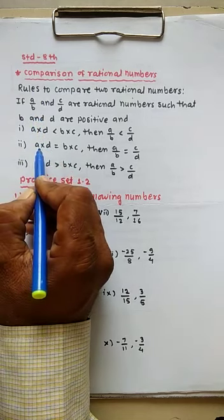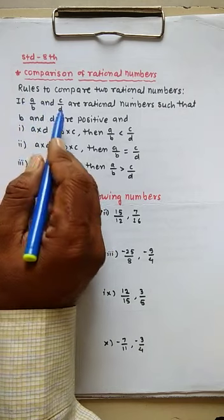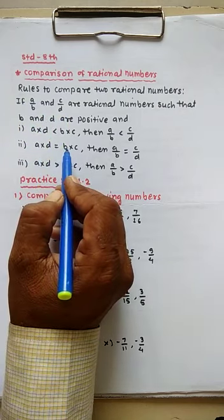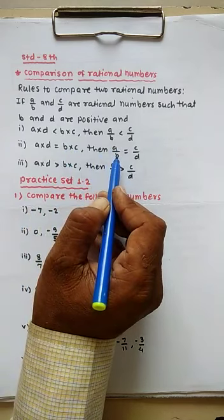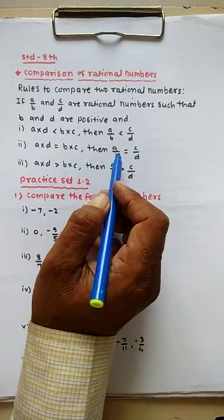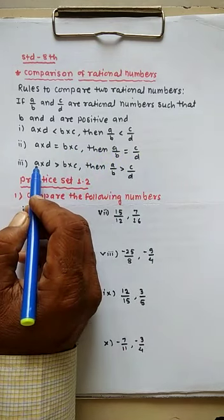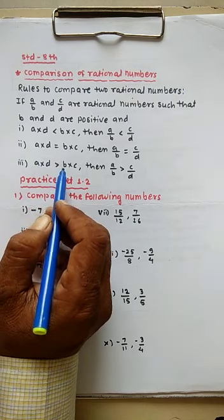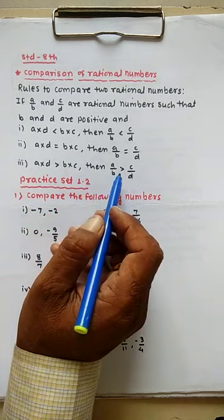Second rule: A multiplied D. First multiply and second multiply — B multiplied C. Then A divided by B equals C divided by D; the two rational numbers are equal. Third rule: A multiplied D is greater than B multiplied C, then A divided by B is greater than C divided by D.